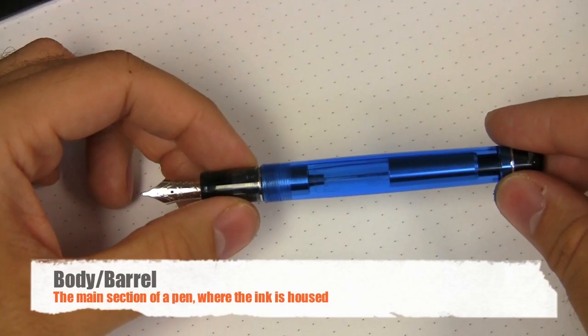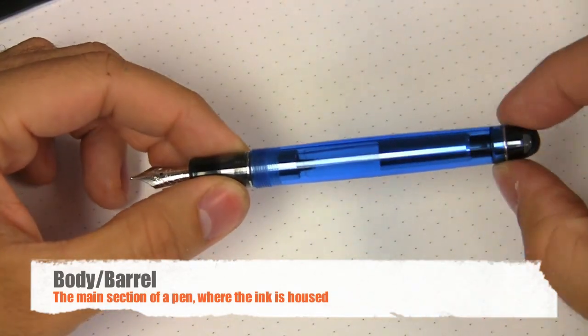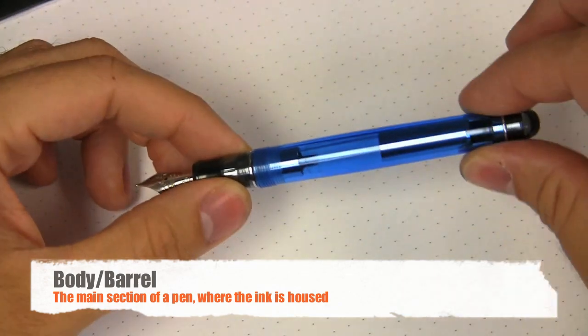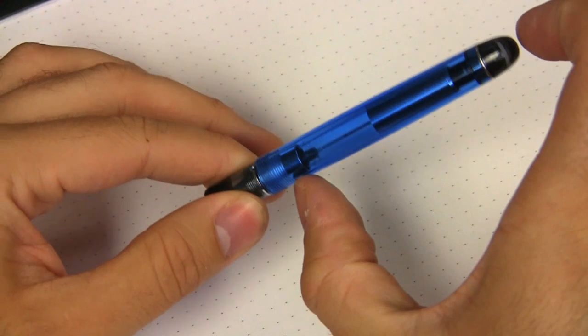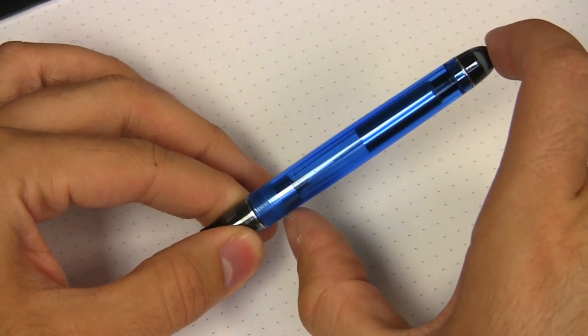The body of the pen is generally referred to as this section right here that houses the ink. It's not the front part that houses the nib. The body generally refers to the back part of the pen.